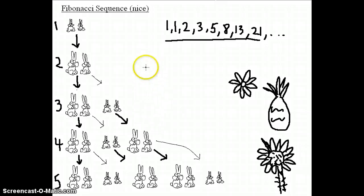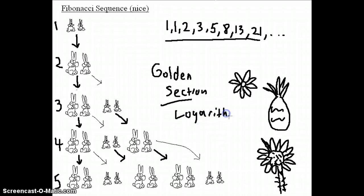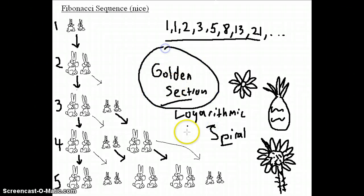Now, why is that? Well, the answer is because of the Fibonacci sequence's relationship with two other amazing mathematical phenomenons. That would be the golden section and also the logarithmic spiral. Now, the golden section and the logarithmic spiral are going to be covered in the next video or the next few videos. So, stay tuned. Stay tuned for that.